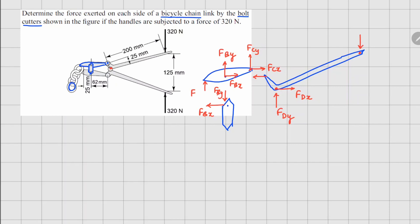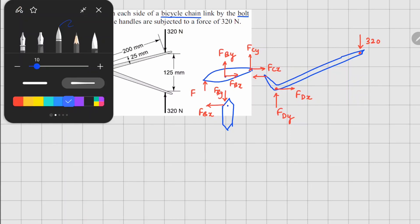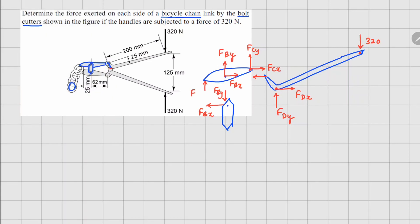At this point here there is this 320N. In terms of distances there are two distances given here: one is this slanted distance of 25, and from here to here this is 200.